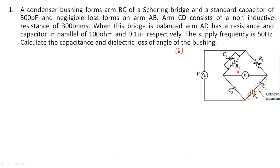The node points are varying depending upon the question. Now in this problem, see the first line: the condenser bushing forms the unknown part. The unknown part is connected in the BC arm — that is from here to here. So I am taking this as BC, this one as A, and this one as D.